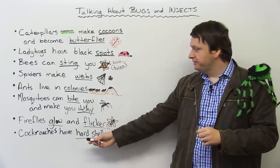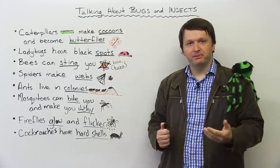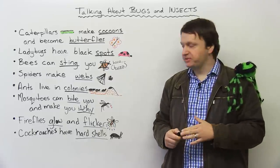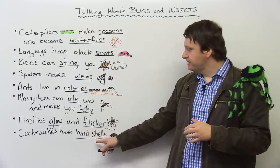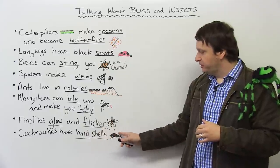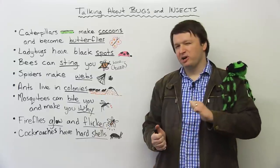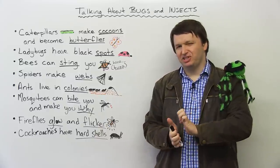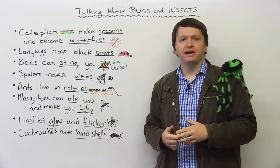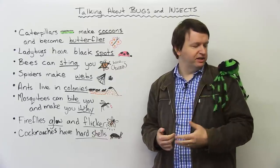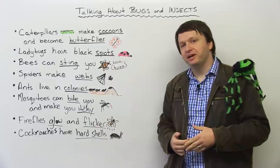And finally, we have cockroaches, which very few people like. They have some uses, but cockroaches have hard shells. The back of the cockroach — the shell of the cockroach — is very hard, which makes them crunchy and hard to kill. Depends on the size of your boot. You would never hurt a cockroach, right, Steve? No, I didn't think so.